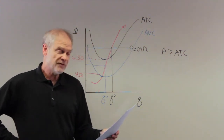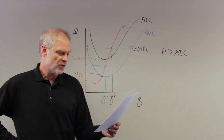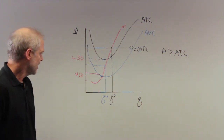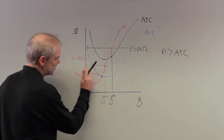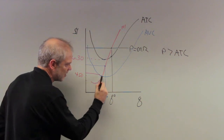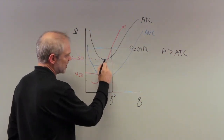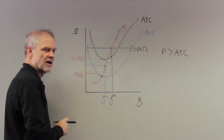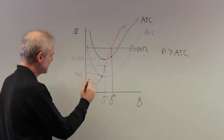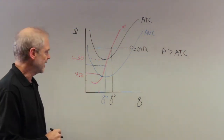Problem 6: refer to Figure 14.1. If the market price is $5, what will the firm earn? $5 falls somewhere between $6.30 and $4.50. $4.50 is where marginal cost is at the minimum of average variable cost; $6.30 is where marginal cost is at the minimum of average total cost. $5 is in between. Let's draw a blue line at $5.